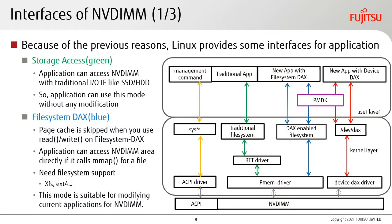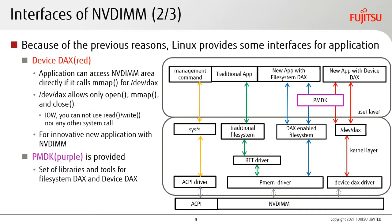Because of these reasons, Linux provides several interfaces for applications. The first is legacy storage access — applications can access NVDIMM with a traditional IO interface like SSD or HDD, requiring no modification. The second is file system DAX (shown in blue): page cache is skipped when using read or write on file system DAX, and applications can access NVDIMM directly if they call mmap on a file. However, it requires file system support like XFS or EXT4, and is suitable for modifying existing applications for NVDIMM.